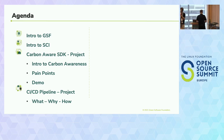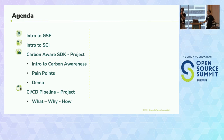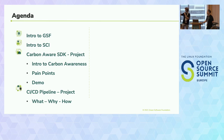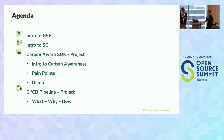We're going to start off by doing a quick intro to GSF — what GSF is about — then move on to explaining what SCI is, which is one of the most used specifications in the GSF, and then go through the Carbon Aware SDK with a quick intro to what Carbon Awareness is and a short demo of the project itself, and then moving on to the CI/CD pipeline towards the end.